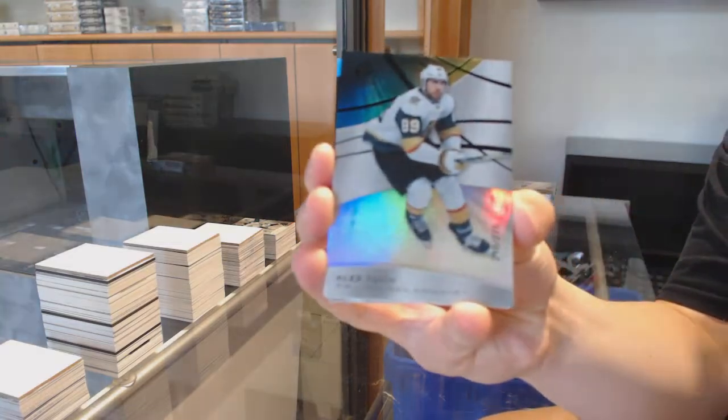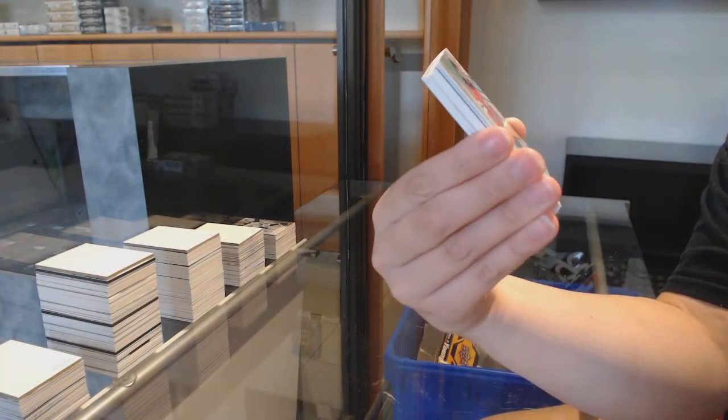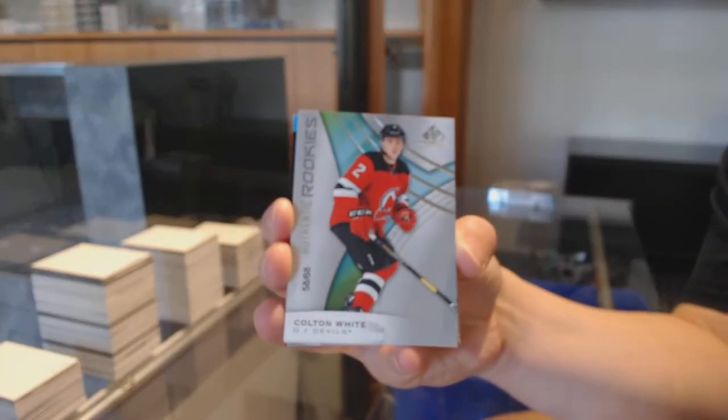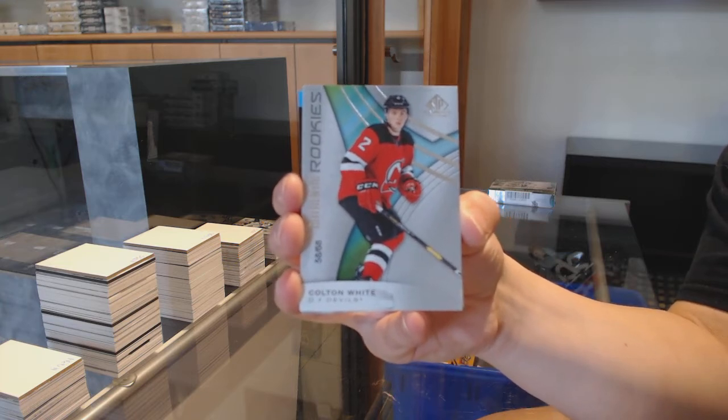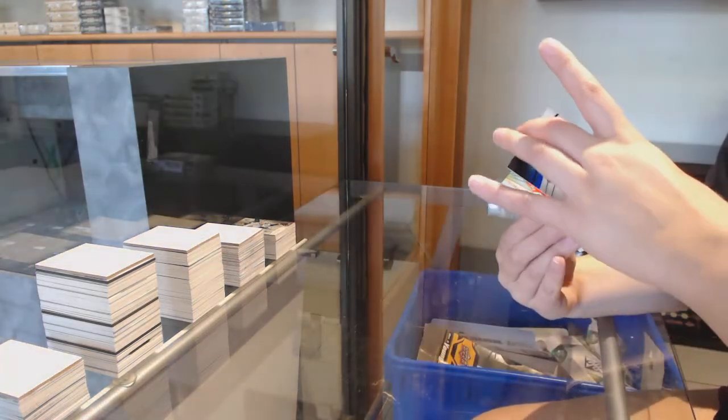We've got number to 275 for Vegas, Alex Tuch. Number 268 rookie for the New Jersey Devils, Colin White. Rookie for the Devils, Colin White, number 268.